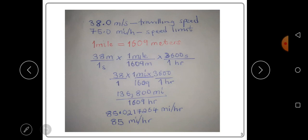the seconds will simplify, and the meters will simplify. So we remain with 38 times 1 mile times 3600 over 1609 over one hour. When we multiply that on a calculator, it's giving us 136,800